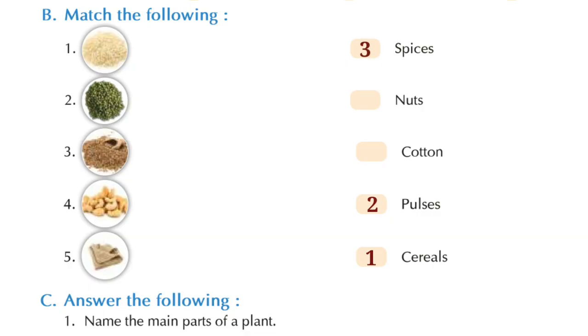Now, what do you see in picture four? These are cashew nuts. So cashew nuts comes under the category of nuts. So let's match picture four with nuts. Now, the last picture, what do you see? We see a piece of cloth, right? So cloths are made of cotton or silk. So let's match the picture five with cotton.